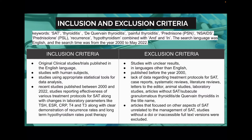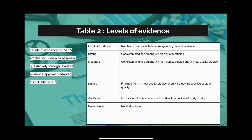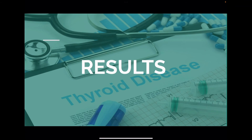Case reports, systematic reviews, literature reviews, letters to the editor, animal studies, and lab studies were all excluded. Table 1 shows the methodological quality of selected articles according to criteria proposed by Brink et al. Table 2 shows the level of evidence according to criteria suggested by Tulldor et al.